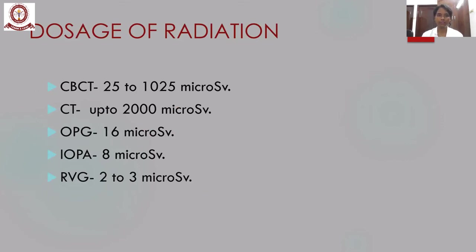These are the different radiation dosages for different imaging modalities. For CBCT it is 25 to 1025 microsieverts, whereas for CT it is up to 2000 microsieverts. For OPG it is 16 microsieverts, for a conventional IOPA it is 8 microsieverts, and for bitewing radiographs it is 2 to 3 microsieverts. Before prescribing radiographs, depending on the need of the patient and the underlying pathology, three-dimensional images should only be prescribed when necessary — not all cases are ideal for CBCT imaging, but when two-dimensional imaging is insufficient, CBCT is advised.